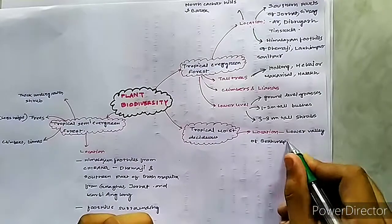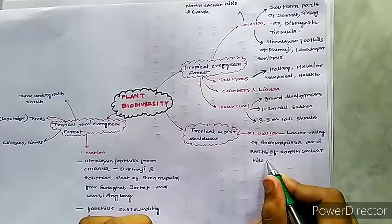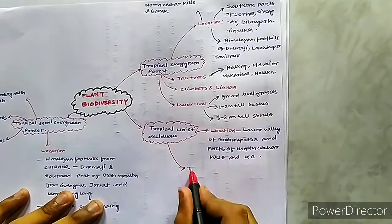Teak, Bonsum, Gamari, Dendrocalamus hamiltonii, various types of palms and so on.